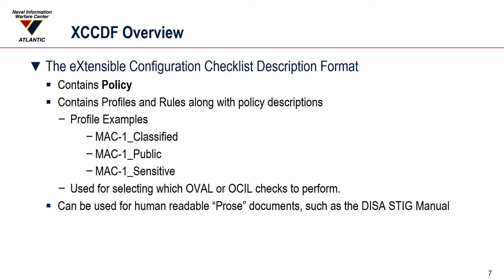XCCDF — the Extensible Configuration Checklist Description Format — is policy. Policy drills down: you can have profiles, groups, and rules. Those rules can point to external checking languages such as OVAL or OCIL. Rules can be grouped within groups, and then rules or groups can be put into profiles. So the requirements for a classified system, public system, or sensitive system might be slightly different, but they can all be within the same policy document. You can choose a different profile to perform automated compliance checking against. The documents can also be transformed into prose documents such as the DISA STIG manual.